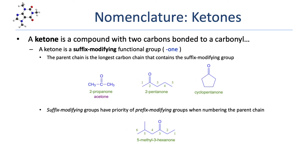A ketone is a carbonyl compound with two carbon groups bonded directly to the carbonyl carbon. As with aldehydes, a ketone is a suffix-modifying functional group. The -e is dropped from the alkane parent chain, and the -one suffix is added. The simplest ketone is 2-propanone, which has a common name: acetone. You might know acetone because it's commonly used as a nail polish remover.